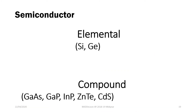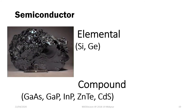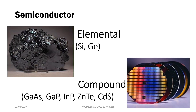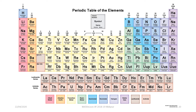Now let's tackle semiconductors. Semiconductors can be classified as elemental, like silicon or germanium, or as compound semiconductors, like gallium arsenide or indium phosphide. Usually our semiconductors occupy the group 4 elements, or compounds between group 3 and 5, or group 2 and 6 elements.